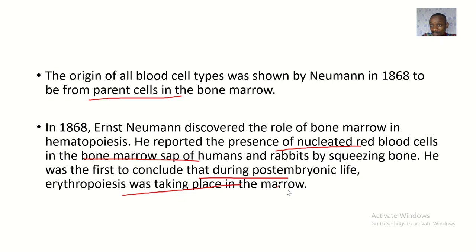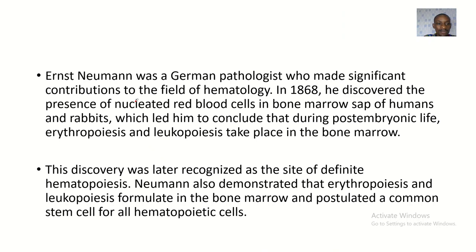Neumann was a German pathologist who made significant contributions to the field of hematology. In 1868, he discovered the presence of nucleated red blood cells in the bone marrow sap of humans and rabbits, which led him to conclude that during post-embryonic life, erythropoiesis and leukopoiesis take place in the bone marrow. His discovery was later recognized as the site of definitive hematopoiesis.